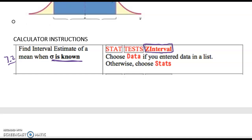We're going to choose data if we entered a list and otherwise we'll choose stats. We're going to do examples that will help us understand those directions.